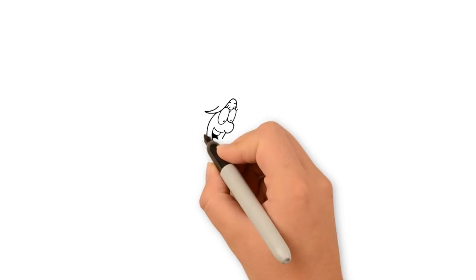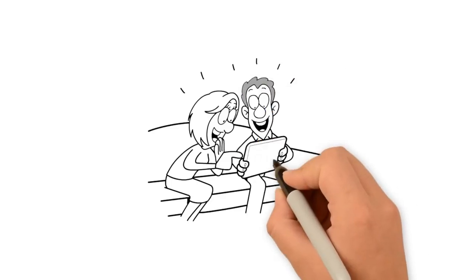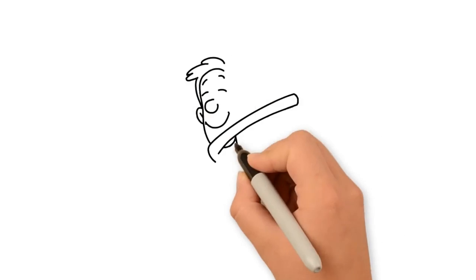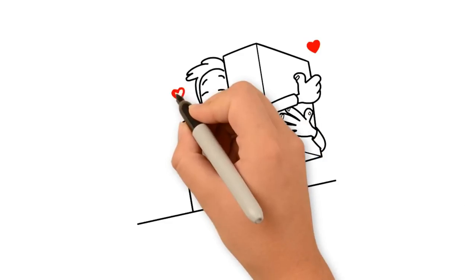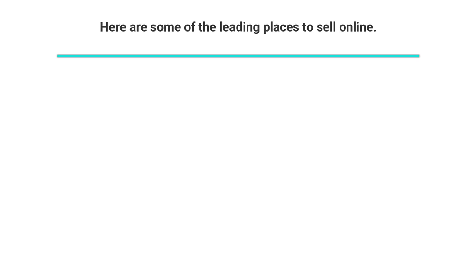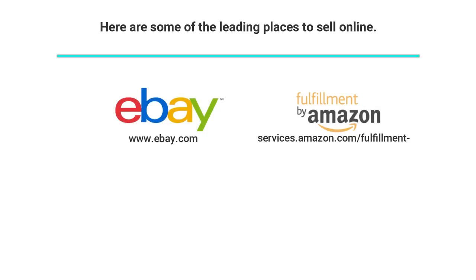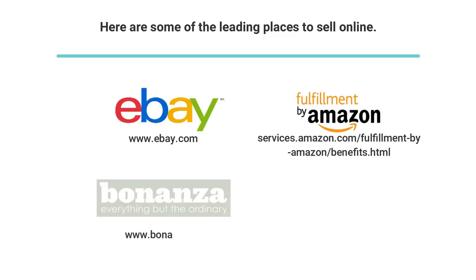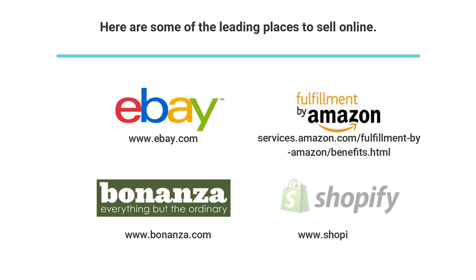Number 15: Start an online store. Selling stuff online is always a great way to make money, but you'll want to determine the ideal venue for your goods. Here are some of the leading places to sell online: eBay.com, services.amazon.com/fulfillmentbyamazon/benefits.html, bonanza.com, shopify.com.